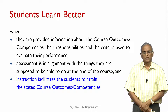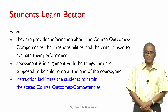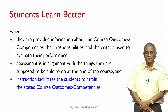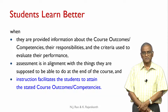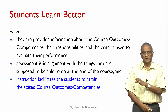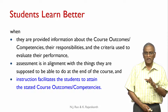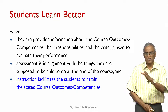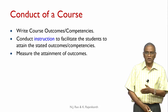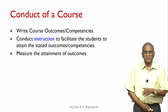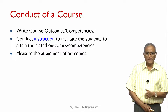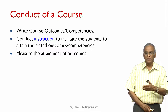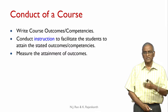Assessment should be in alignment with what students are supposed to be able to do at the end of a course — we addressed this using a taxonomy table to decide alignment and how to design assessment in alignment with course outcomes. Instruction — the third element — facilitates the student to attain the stated course outcomes and competencies. The sequence in an actual course is: write course outcomes, conduct instruction, then measure attainment of outcomes.